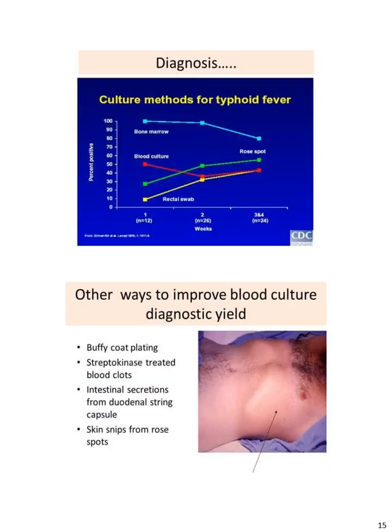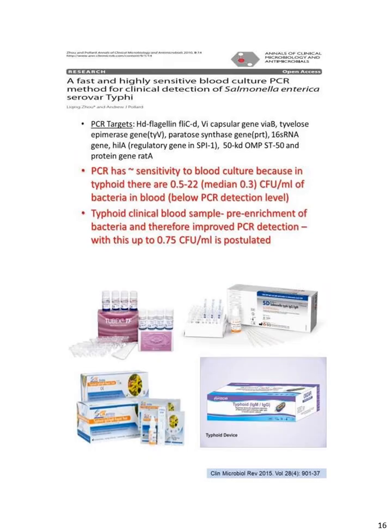Other ways to improve blood culture diagnostically include Buffy coat plating, streptokinase-related blood clots, or intestinal secretions from duodenal capsules. PCR is a fast and highly sensitive method for the detection of Salmonella Typhi.